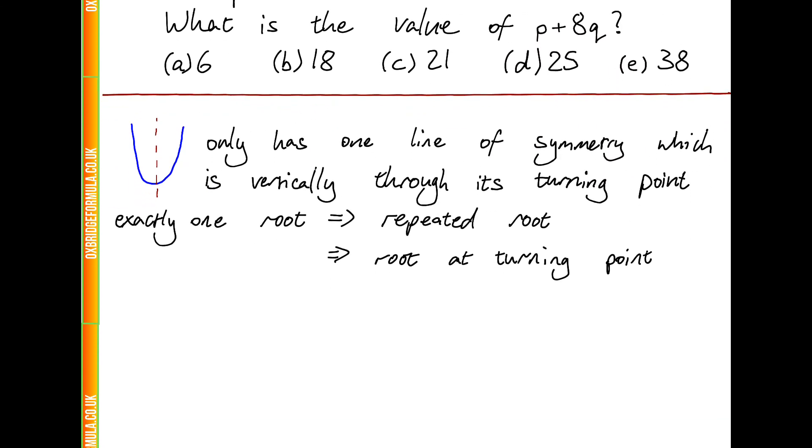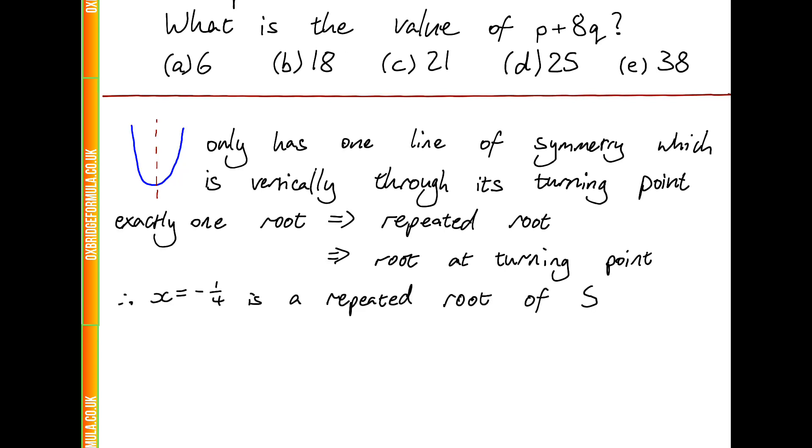So we can therefore write down the equation for S as some constant times by x plus a quarter squared, because we know that it's a quadratic expression, but we don't know the coefficient of x squared, so we're just going to call it some general real number a. And now if we expand that out, we get a times by x squared plus a half times a times x plus 1/16th times by a.